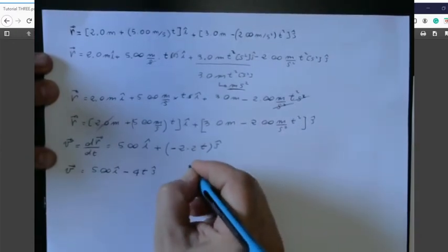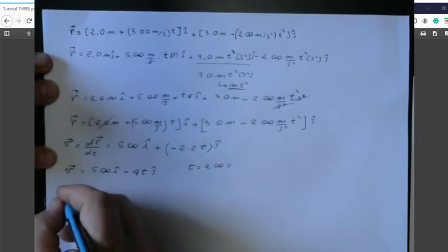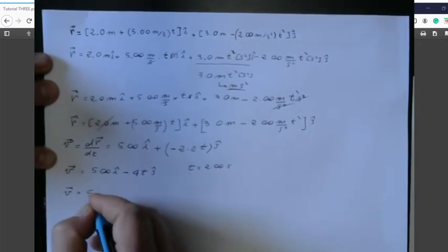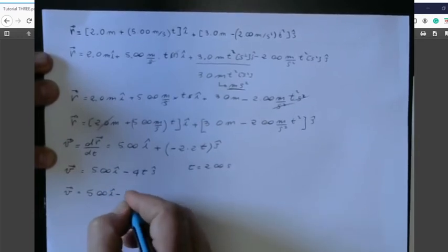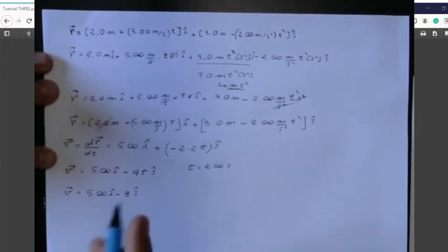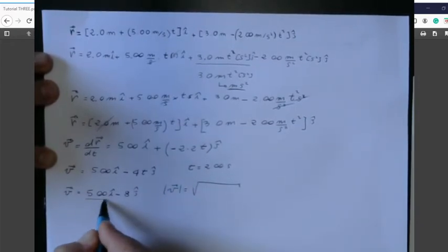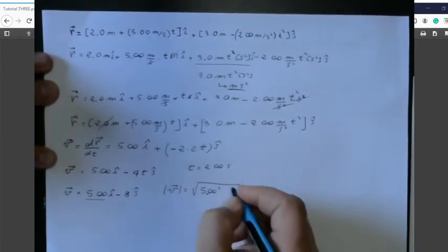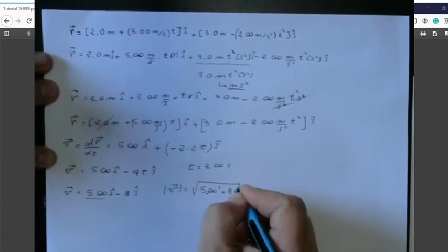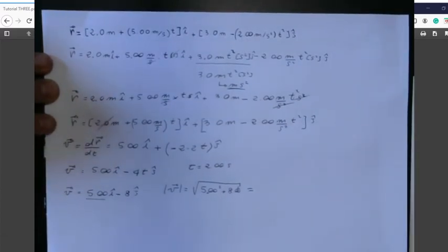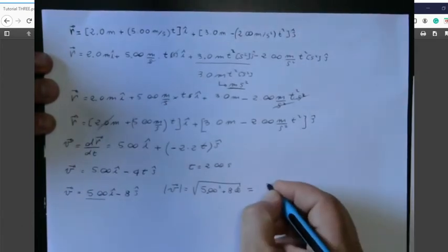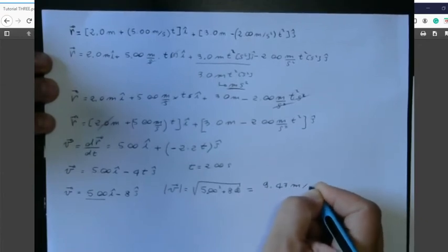The next step, because t is equal to 2.00 seconds, we have that the velocity is equal to 5.00i minus 8j. Now, because we want the magnitude of this value, we have that v is equal to the square root of the component in i squared. We have 5.00 squared plus 8.00 squared. That value would be the square root of 25 plus 64, and that is equal to 9.43 meters per second.